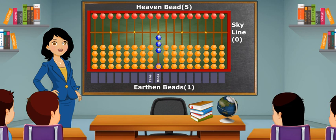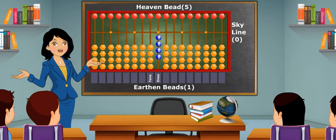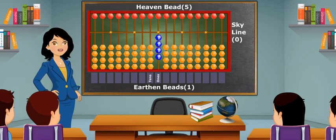To show 4, take another bead upwards. When all the earthen beads touch the skyline, it symbolizes number 4.